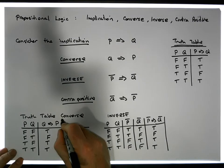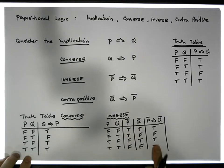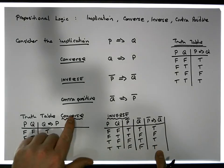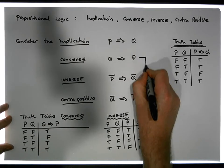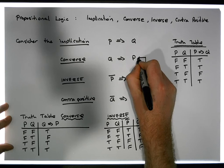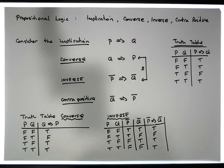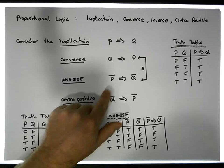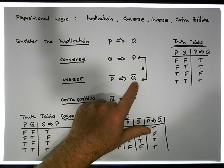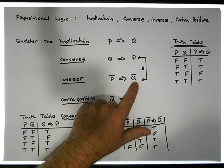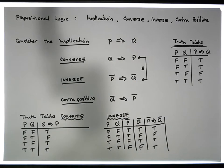Hopefully what you can see now is that the output for the inverse is exactly the same as the output for the converse. So these two statements are logically equivalent to each other. For example, if I argue 'if I don't go to the shops, then I don't buy a bottle of Coke' — that's the same argument as saying 'if I buy a bottle of Coke, then I didn't go to the shops.'